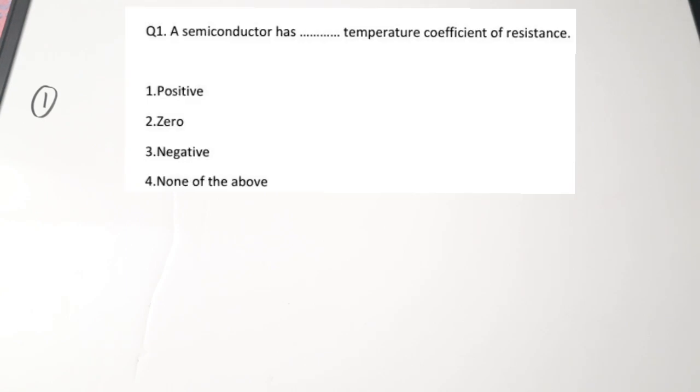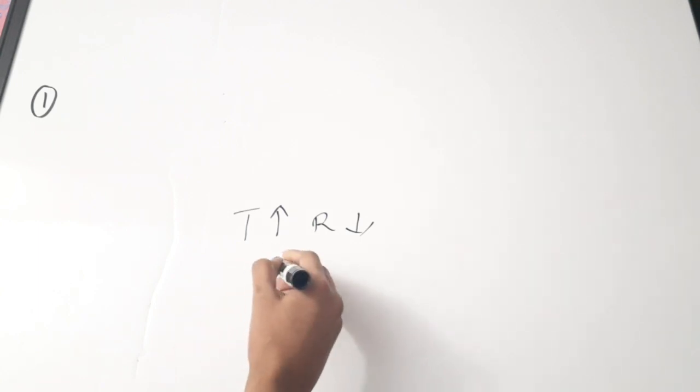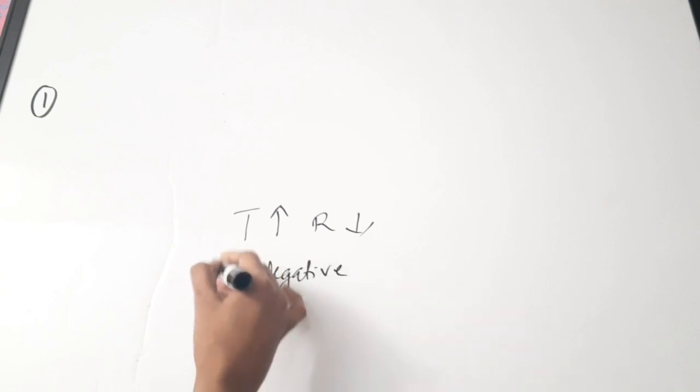The first question is: a semiconductor has dash temperature coefficient of resistance. Generally, when the temperature of a semiconductor material is increased, the electrons will tend to break the bond and they will be free, and the resistance will be reduced. Some minority carriers will also be generated. As the temperature is increased, the resistance gets reduced. So semiconductors have a negative temperature coefficient of resistance. Correct answer is 3 — negative.